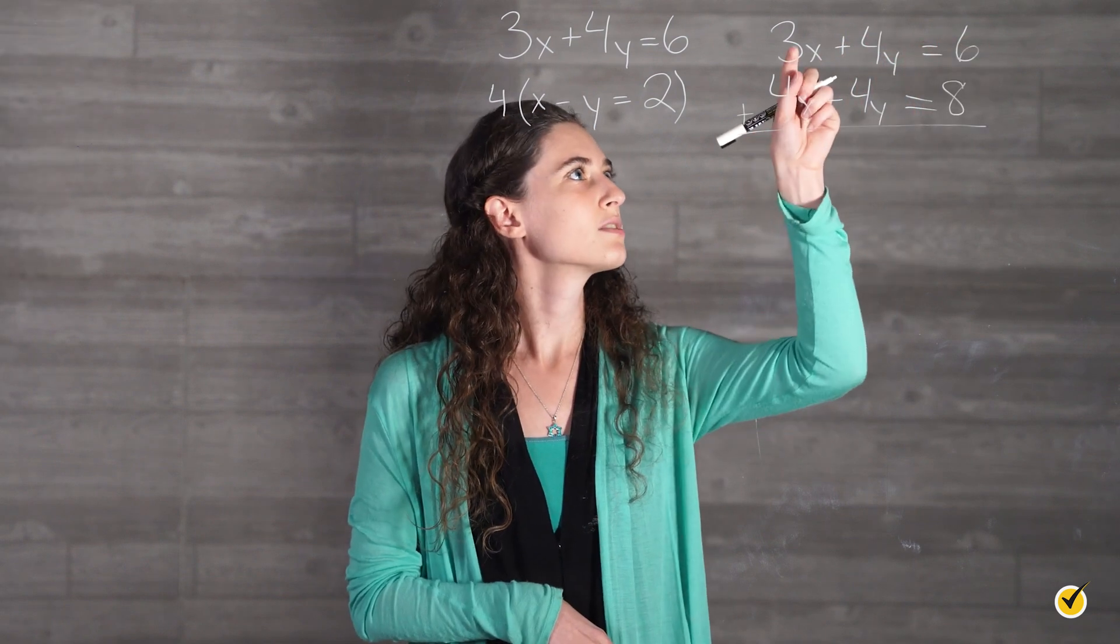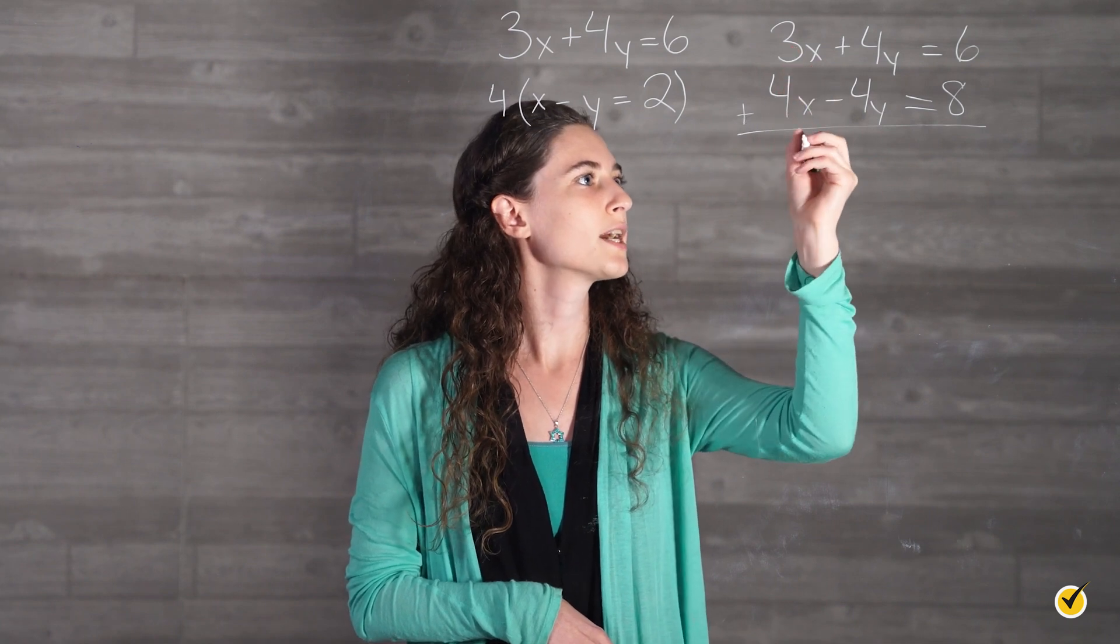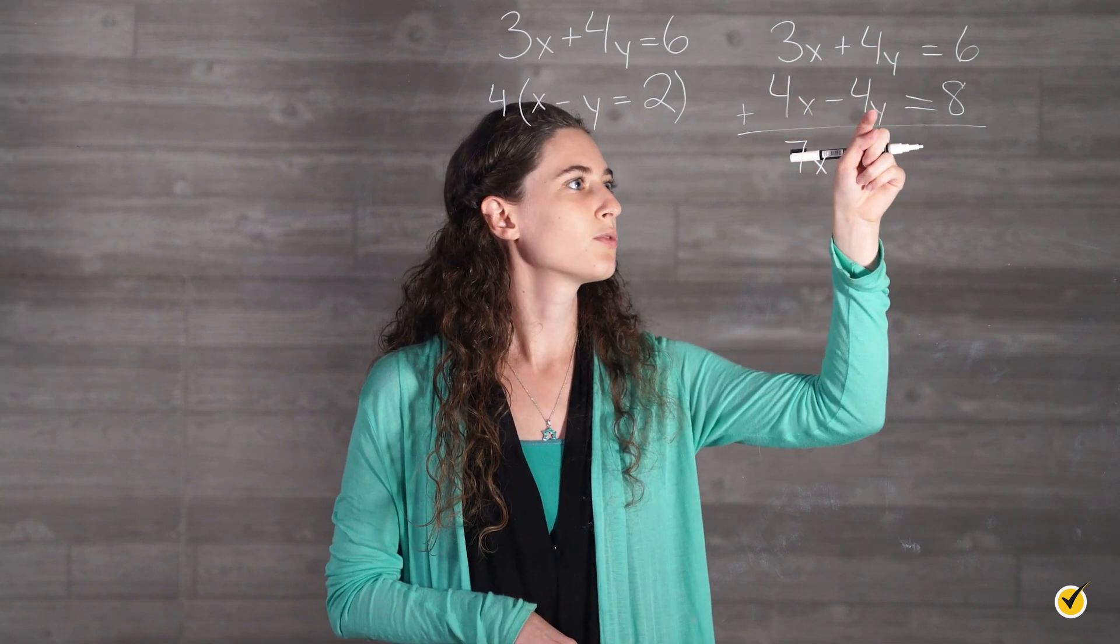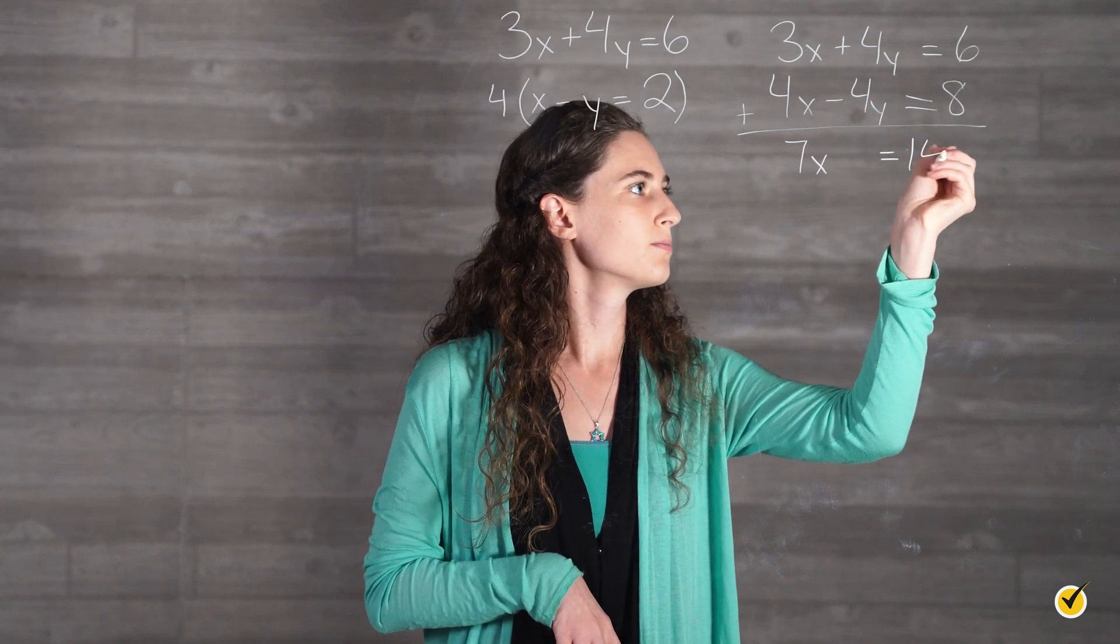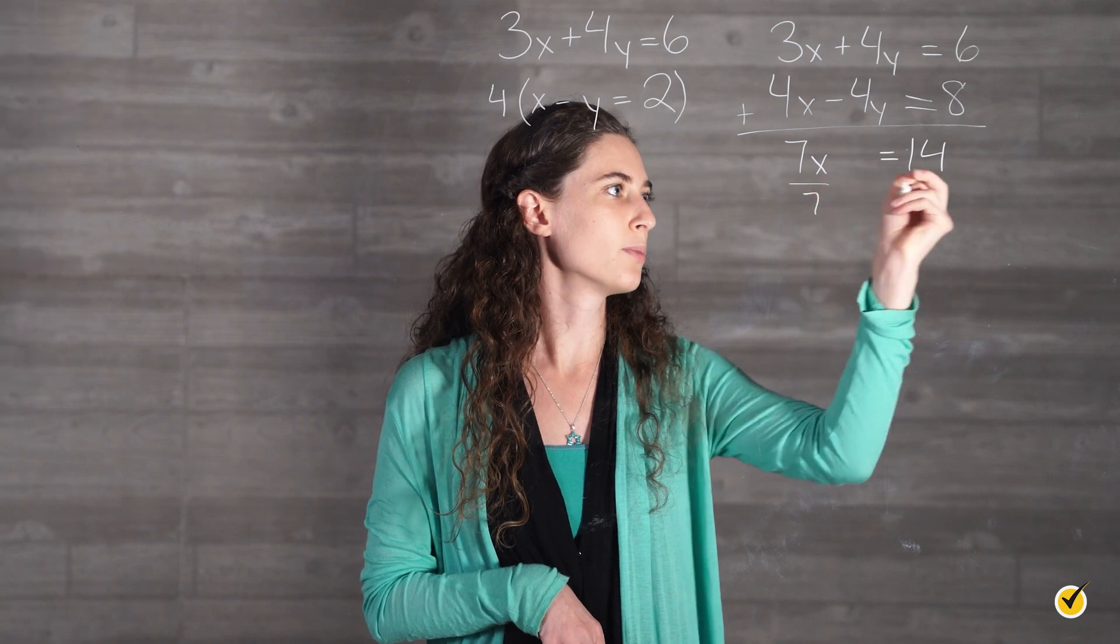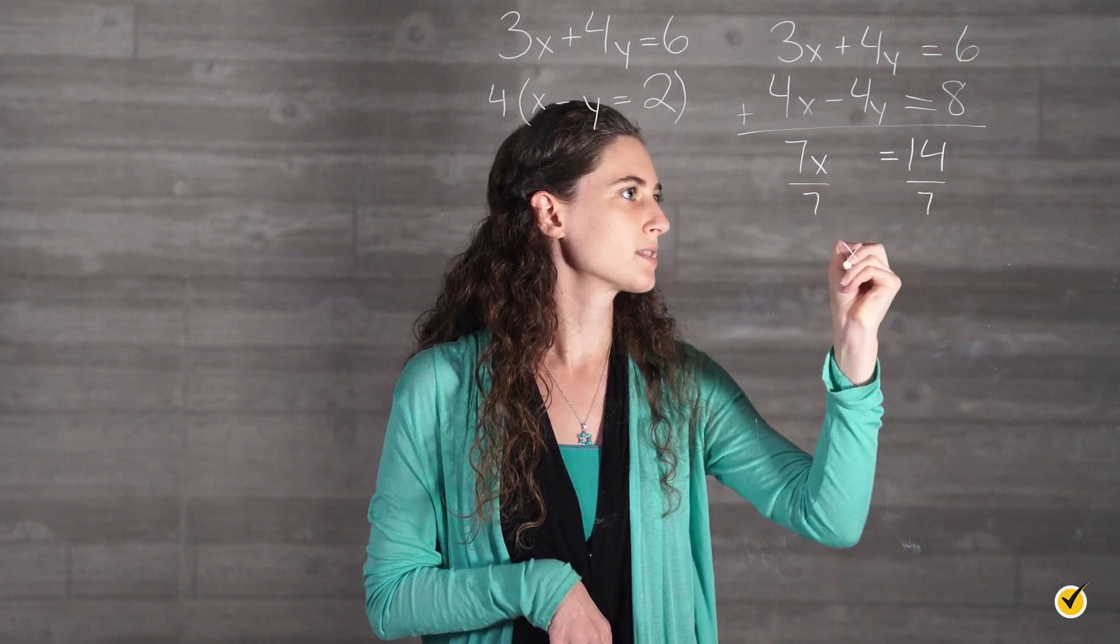Then we will add the two equations. 3x plus 4x is 7x. 4y minus 4y equals 0. And 6 plus 8 equals 14. If we divide by 7 on both sides, we get that x is equal to 2.